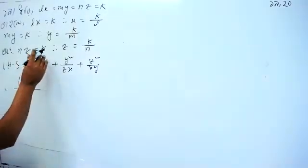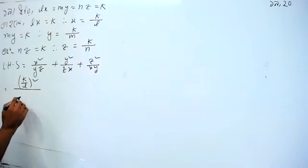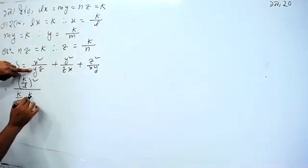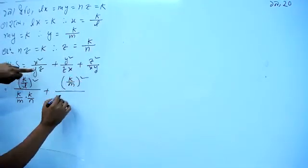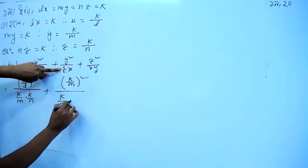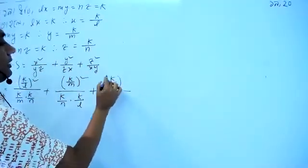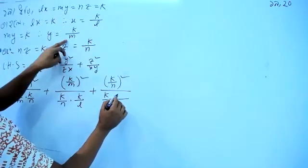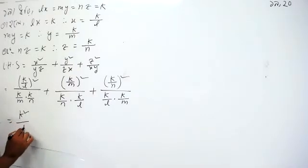Substituting: x is equal to k by l, y is equal to k by m, z is equal to k by n into the expression. Working through the terms: k square by l square, k square by m square, k square by n square, simplifying each term involving l, m, and n.